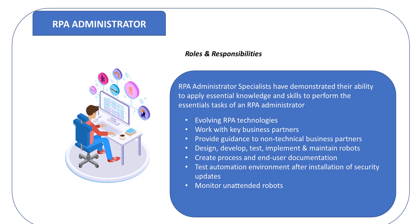The RPA administrator tests the automation environment after installation of security updates, monitors unattended robots, and coordinates support activities when bots fail. They track and score process automation for feasibility of implementation and value using standardized RPA scoring tools and methods, and work with IS management to establish processes and standards to govern the initial phase of citizen development. They also provide coaching or coordinate vendor training for citizen developers, and provide support for RPA deployments and troubleshoot RPA production issues outside of work hours, including participation in an on-call rotation as needed.